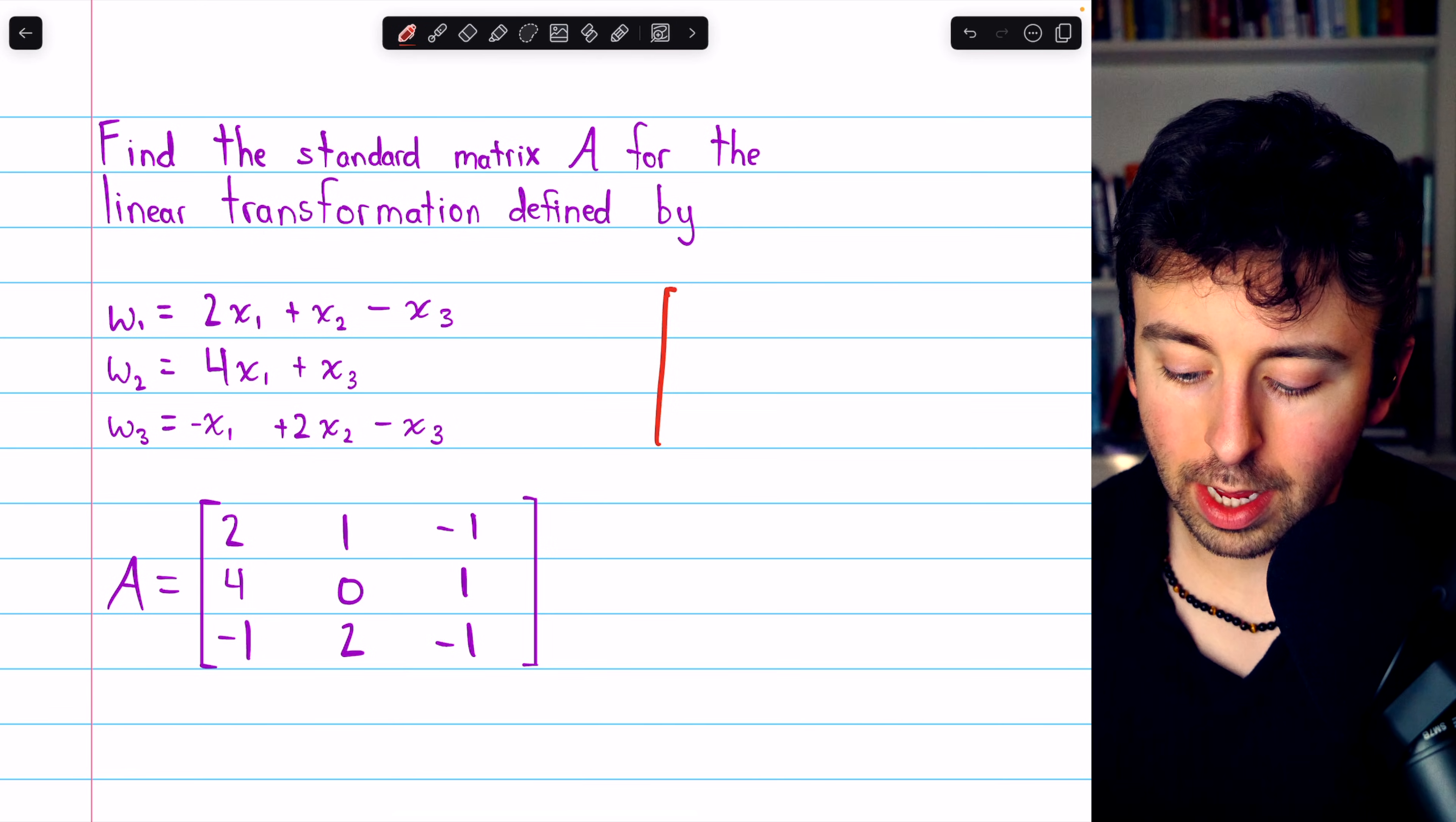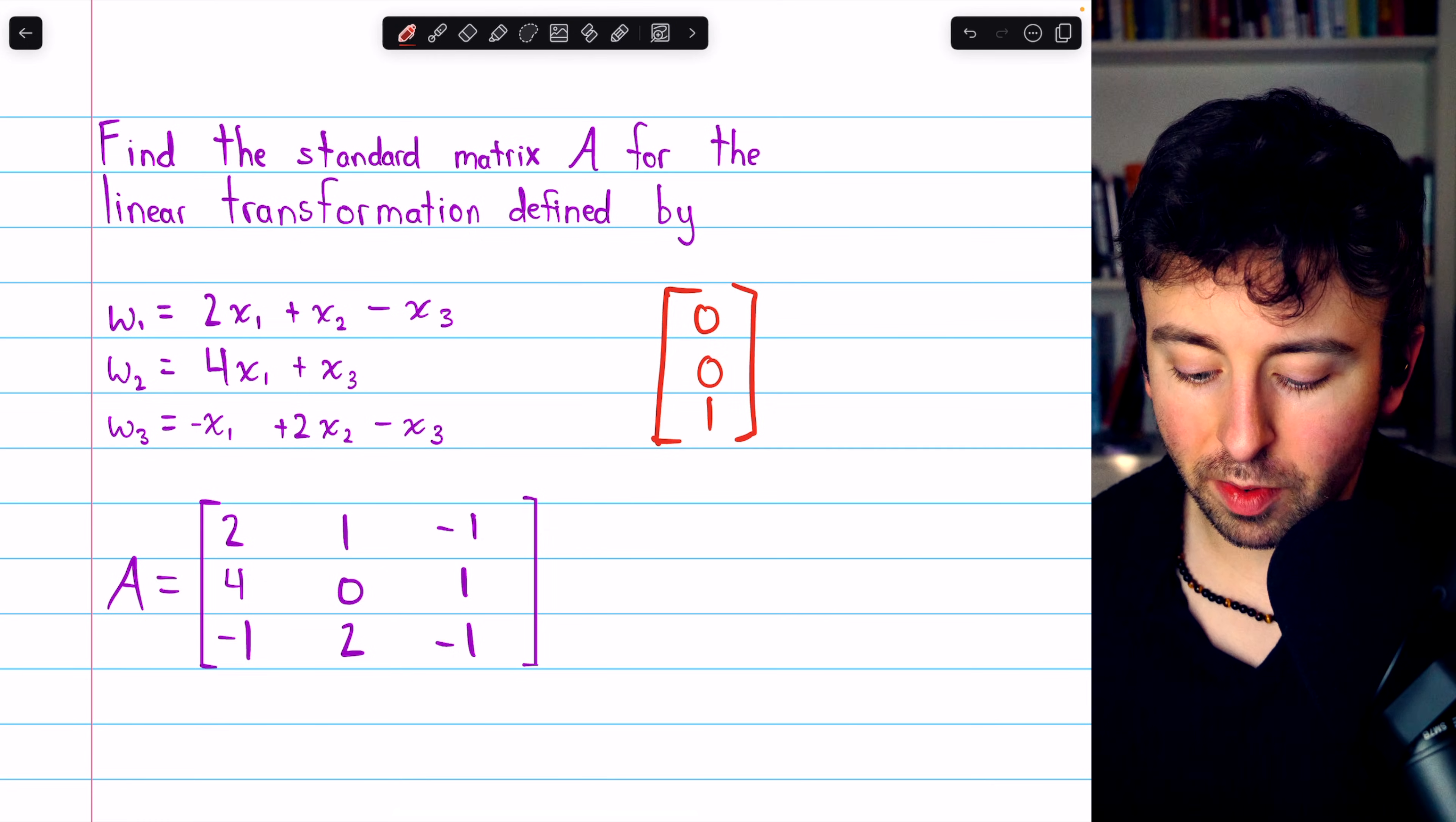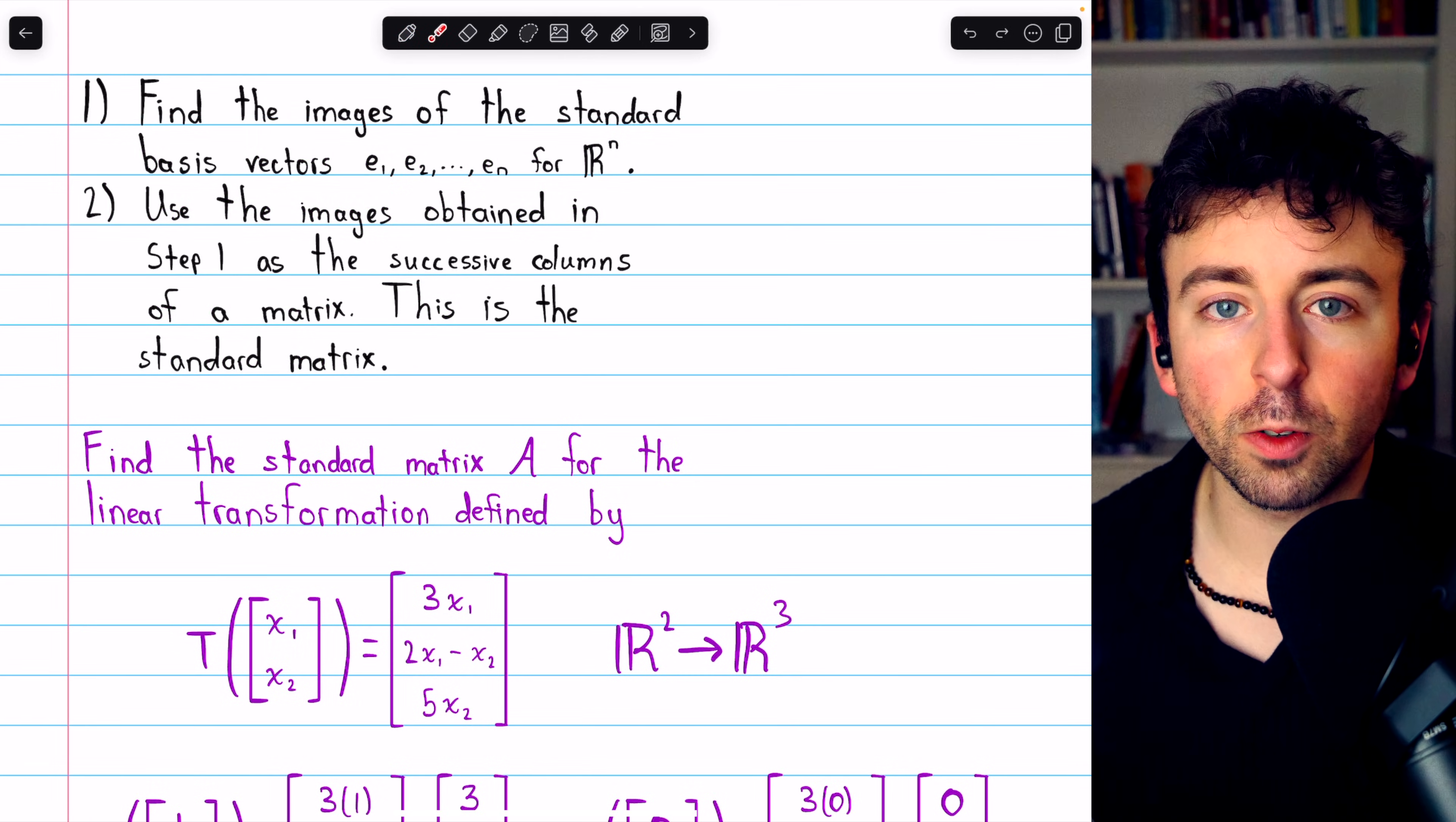You can see, for example, if we plugged in the basis vector (0, 0, 1), that would get mapped to the column vector negative 1, 1, negative 1. And that's how easy it is to find the standard matrix for a linear transformation.